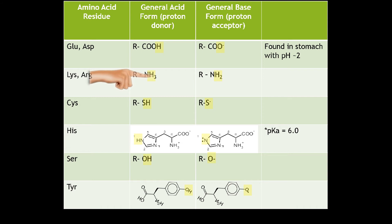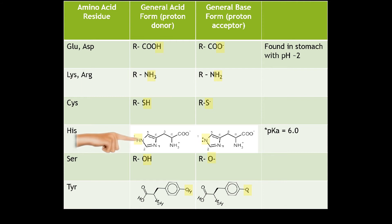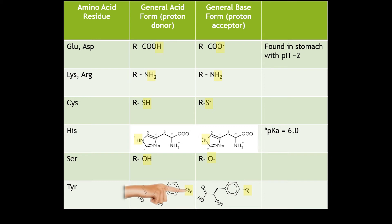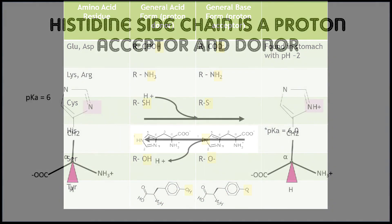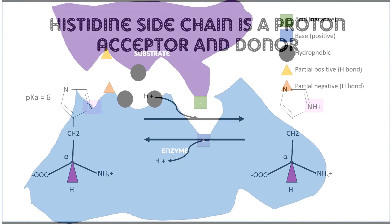With lysine and arginine, we have a nitrogen donating a hydrogen, which can then be accepted back in the base form. Cysteine donates the hydrogen in the sulfhydryl group and can accept it back. Histidine — remember, this one has a pKa of 6 — is going to be very common in areas with physiological pH, which is most of the body. The nitrogen of the imidazole group is going to donate a hydrogen and then accept it back in the base form. Serine can donate a hydrogen and take one back. Tyrosine, which also has a hydroxyl group, can donate and take it back in the base form. In one step, histidine can be a donor and in another it can be an acceptor — that's what makes it so important in active sites.